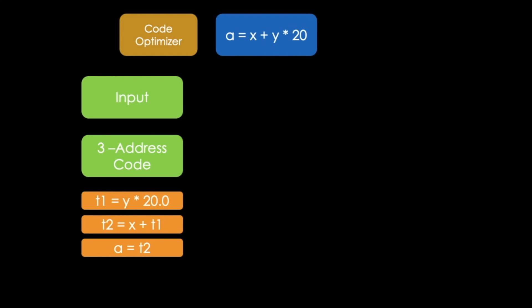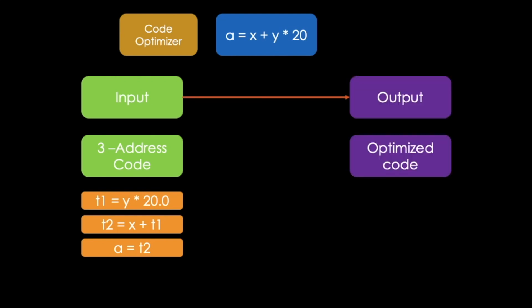Next, a code optimizer is used to improve time and space requirements of the program. Our TAC will serve as an input here. The code optimizer outputs optimized code, so it eliminates redundant code which is present in the program, as you can see here.